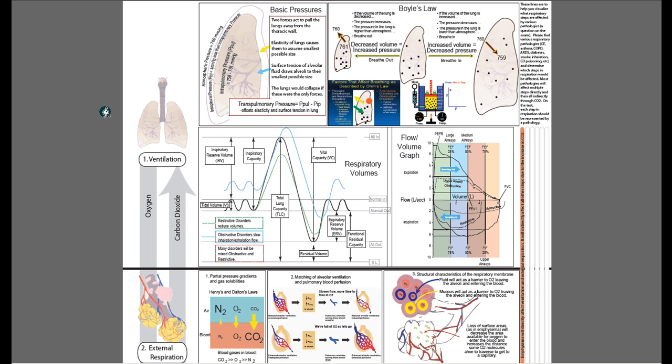As an example, I put emphysema on here. Emphysema is going to affect both ventilation and external respiration. It's going to affect ventilation because it's going to be difficult to decrease the volume. What happens in emphysema is the tiny little alveoli break into large alveoli. This removes some of the elasticity of the lung, and so that makes it difficult to decrease the volume, increase pressure, and breathe out.